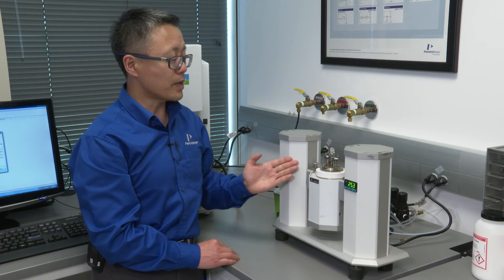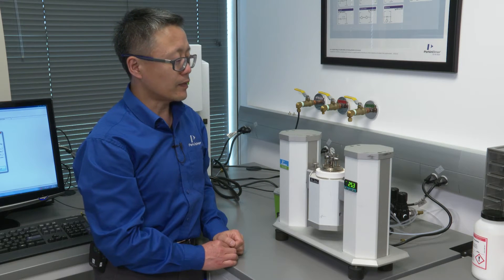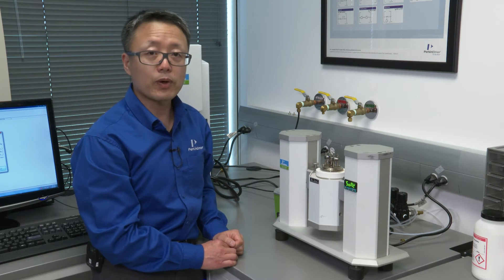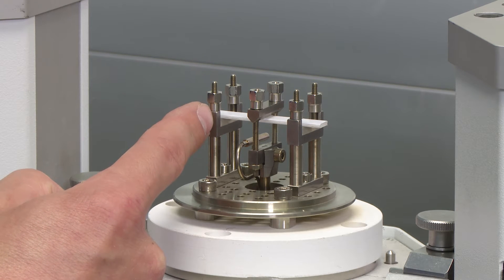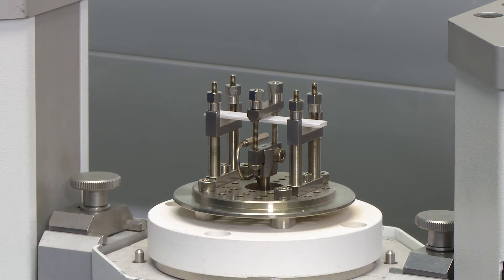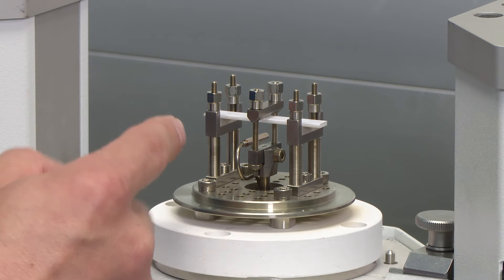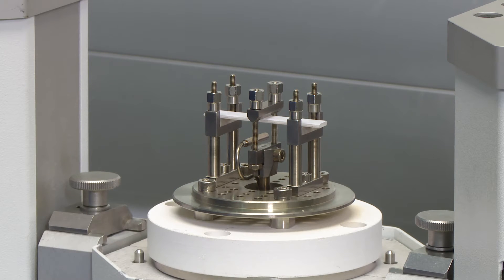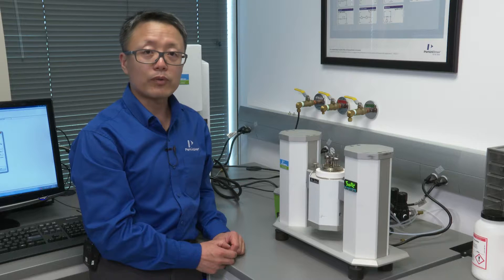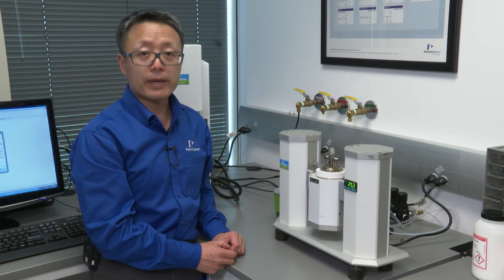Then you want to measure the sample length. The sample length for three-point bending is between one of the outer knives and the center knife. Or you can measure the distance between the two outer knives and divide that length by two. That will be the sample length for three-point bending.